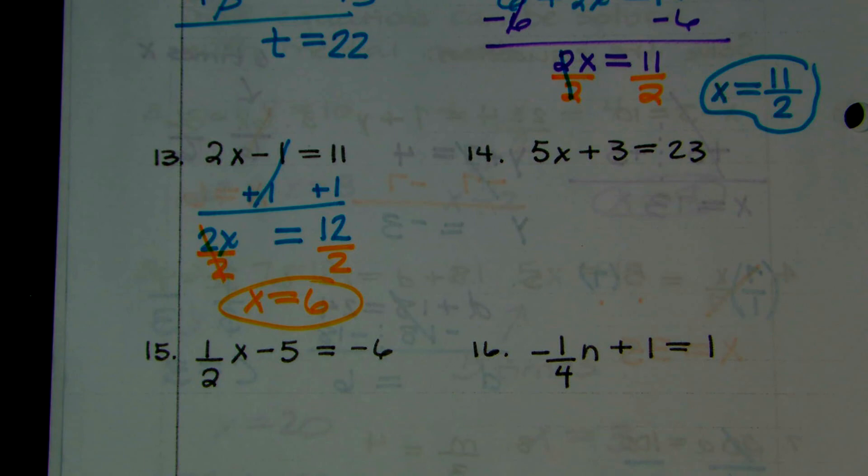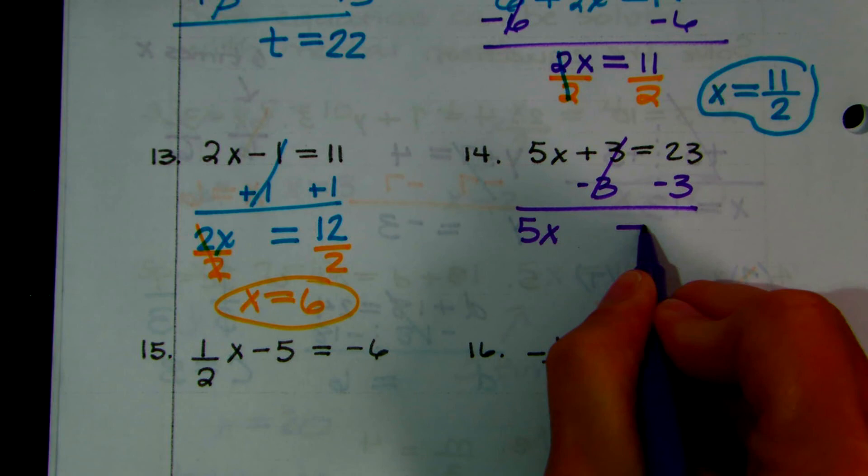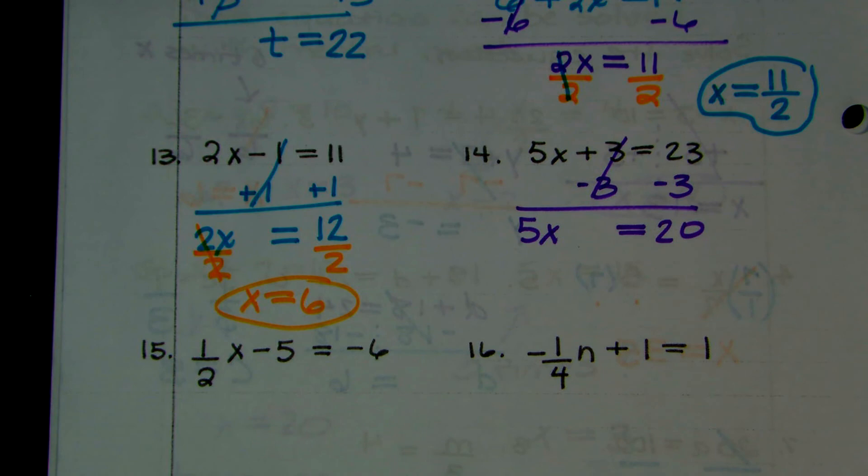Number 14: what would you do first? You would subtract 3. Those add out, 5 times x comes down, 23 minus 3 is 20. So 5 times x equals 20. We're going to divide both sides by 5. So x equals 20 divided by 5, which would be 4.